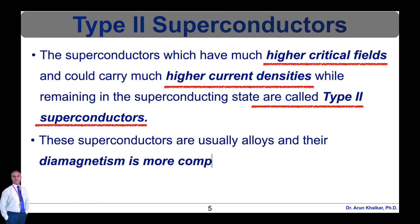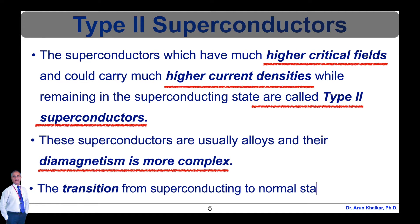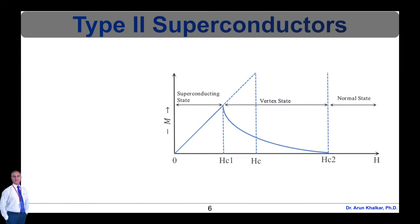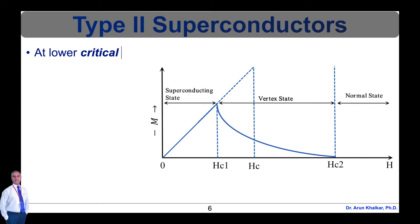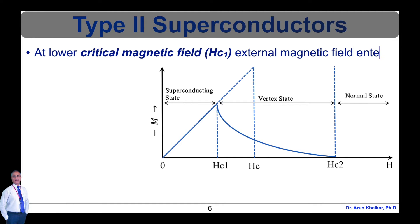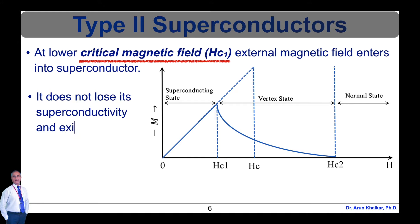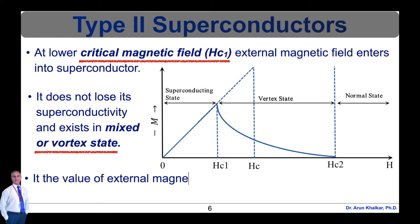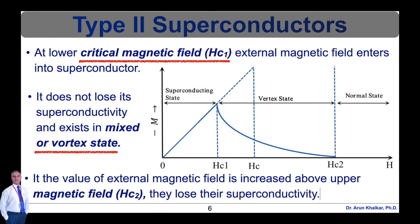These superconductors are usually alloys and their diamagnetism is more complex. Certain alloys show different behavior — the transition from superconducting to normal state is gradual. For type 2 superconductors, as shown in this graph, they have two critical magnetic fields. At the lower critical magnetic field HC1, the external magnetic field enters into the superconductor but it does not lose its superconductivity and exists in a mixed or vortex state. If the external magnetic field is increased above the upper critical magnetic field HC2, they lose their superconductivity.